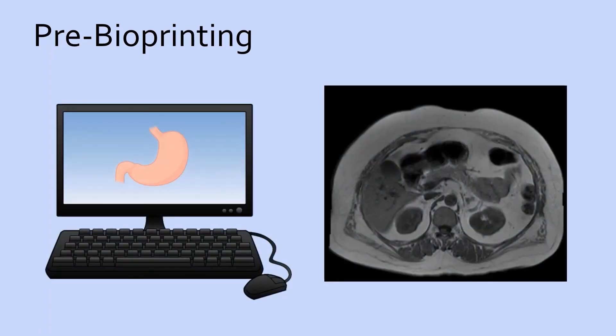The first step in the process is known as pre-bioprinting. Here, the desired product is determined and studied. Oftentimes, 3D scans such as CT scans or MRI images are taken of the desired product and are then converted into a series of 2D images to serve as a template for the different layers.